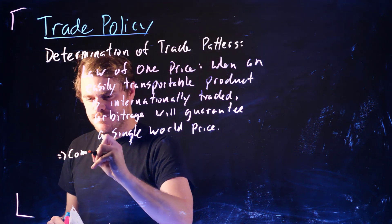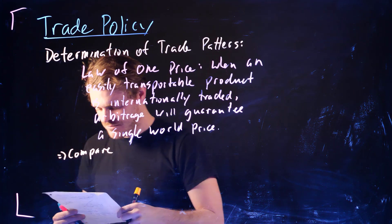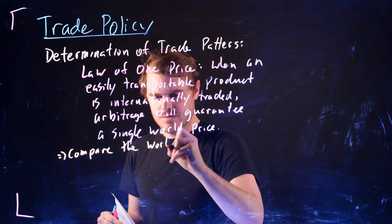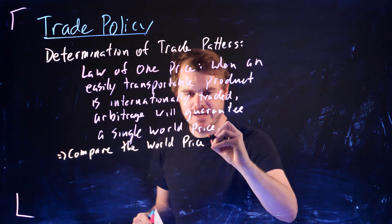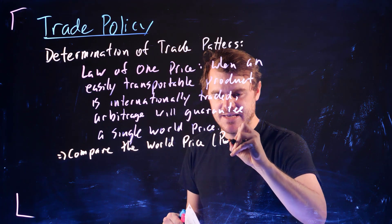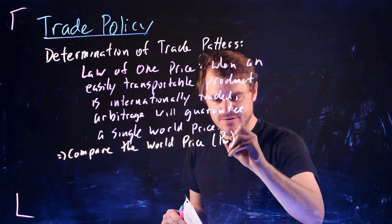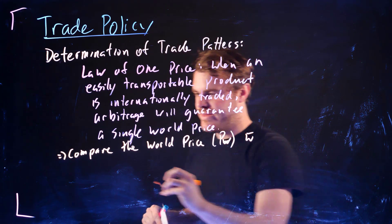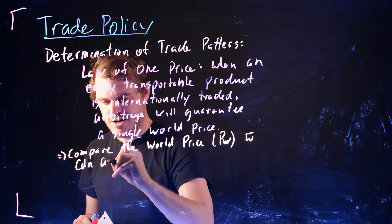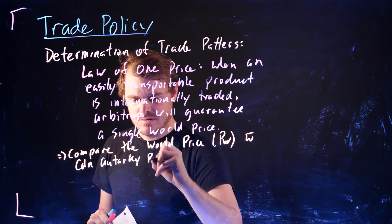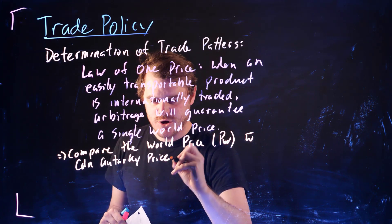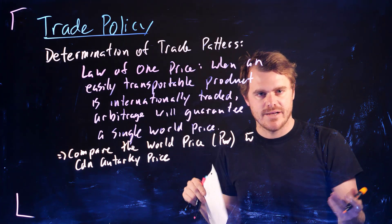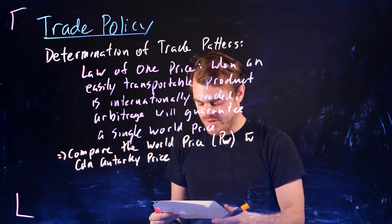So compare the world price—this is this one price that we are talking about here, and we're going to denote that Pw, P subscript W—with Canadian autarchy price. So again, autarchy just means no trade. So Canada would just be producing everything themselves and not trading with other countries.